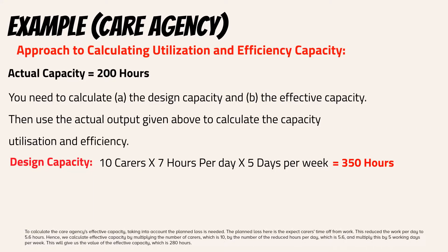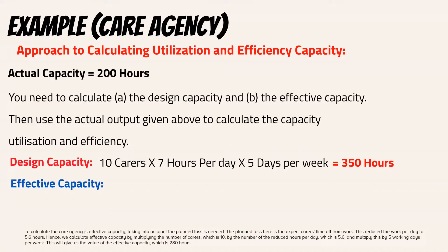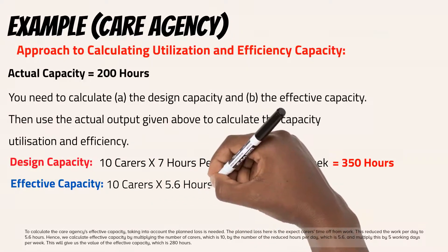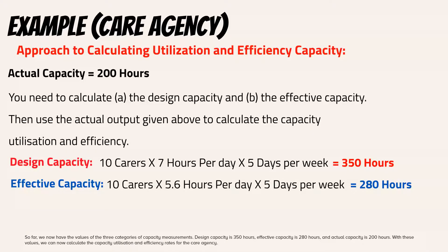To calculate the care agency's effective capacity, we take into account the planned loss — the expected carers' time off from work, which reduces the work per day to 5.6 hours. We calculate effective capacity by multiplying the number of carers (10) by the reduced hours per day (5.6) and multiplying by 5 working days per week. This gives us an effective capacity of 280 hours. So far, we now have the values of all three categories: design capacity is 350 hours, effective capacity is 280 hours, and actual capacity is 200 hours.